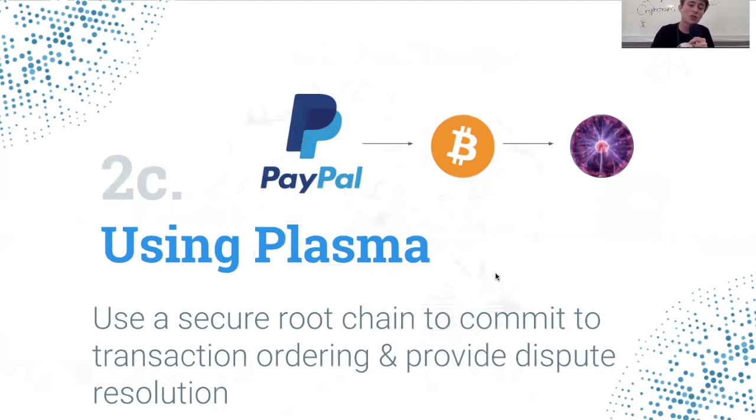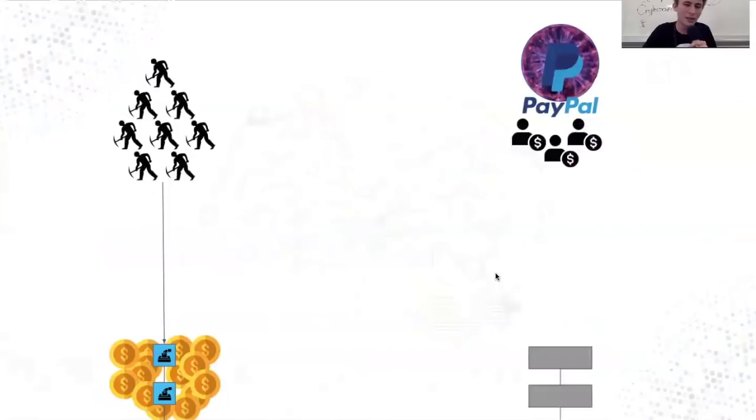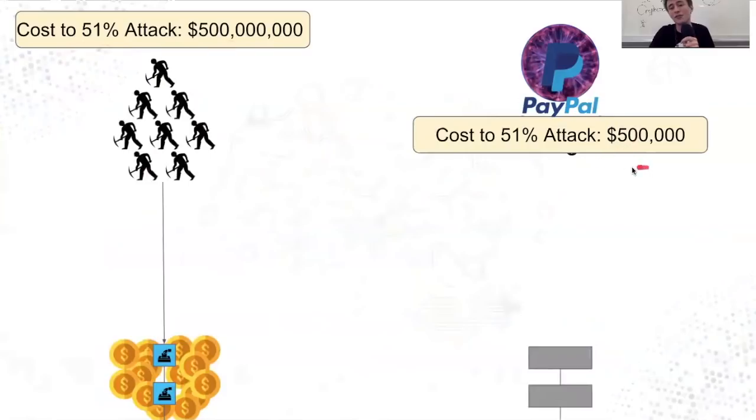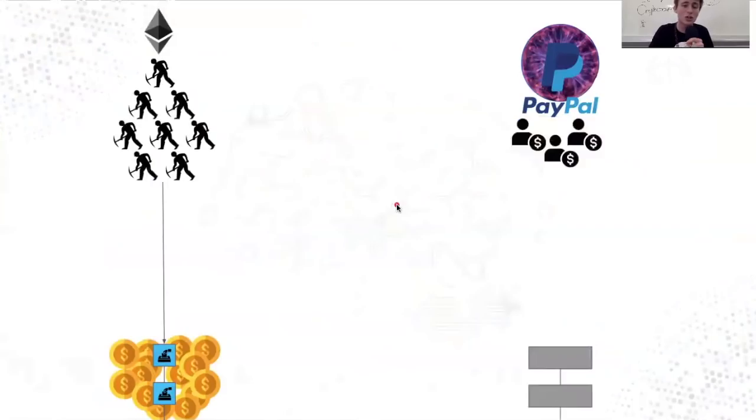What Plasma allows us to do is commit to ordering on the root chain and provide dispute resolution on a secure root chain. On the left, we have our secure root chain, and on the right, we have our less secure PayPal chain. The 51% attack cost is $500 million here and $500,000 here. We clearly want 51% attacks or these reorgs to be extremely costly, more on the order of $500 million than $500,000. To do that, we'll use this chain as our root security chain.